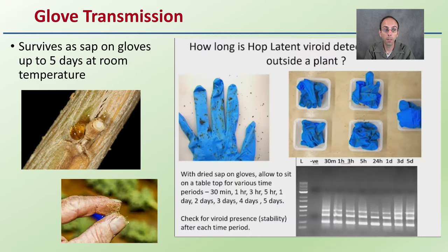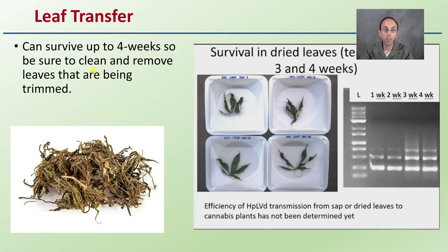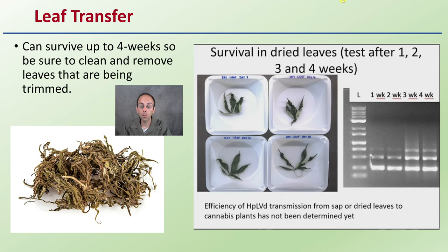Regarding glove transmission, hop latent viroid survives on sap on gloves for up to five days at room temperature, showing how very stable it is. When discarding gloves after trimming, place them in a trash can and remove them entirely from the growing area. Leaf transfer is also a concern — it can survive on leaves for four weeks, so be sure to clean and remove trimmed leaves. Dried leaves tested at one, two, three, and four weeks still came back positive, demonstrating just how stable this viroid is.